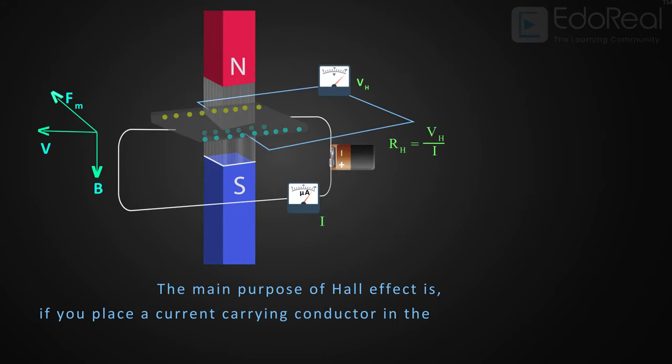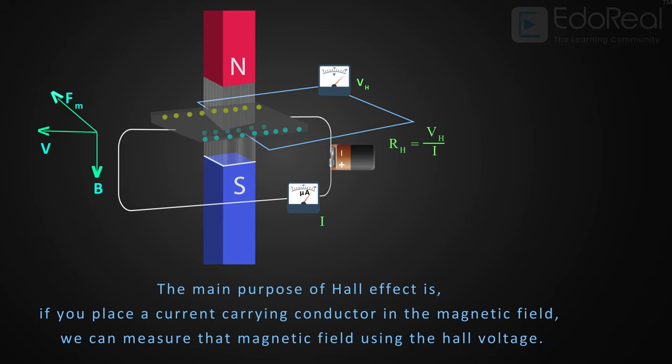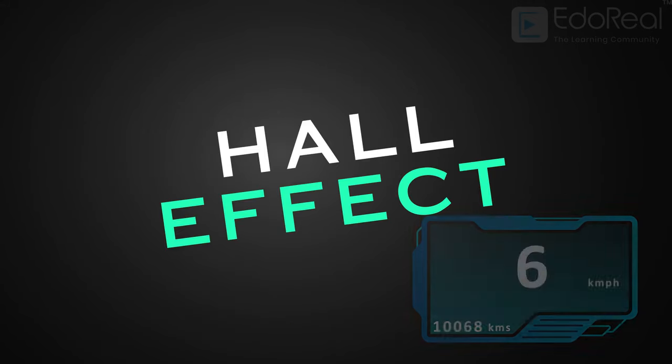The main purpose of this whole Hall effect thing is: if you place a current-carrying conductor in the magnetic field, we can measure that magnetic field using the Hall voltage. Let's see how the Hall effect is used in speedometers.